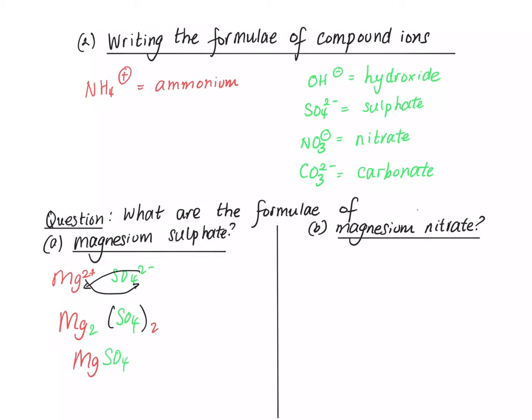And the reason why it's MgSO4, not Mg2(SO4)2, is because in chemistry we like to keep things simple, so these 2 are the same as 1 to 1, which is why there's an imaginary 1 there, and an imaginary 1 there.